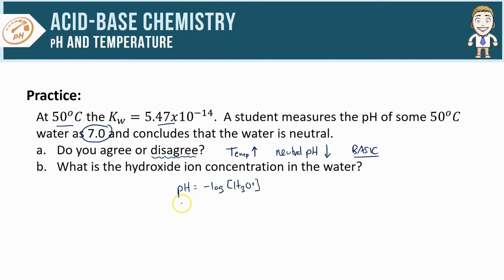Now let's do part B and calculate the OH- concentration, starting with that pH formula. Since I know the pH is 7, I can plug it in and solve for the H3O+ concentration. If I do that, I find that the H3O+ is 1 × 10^-7.